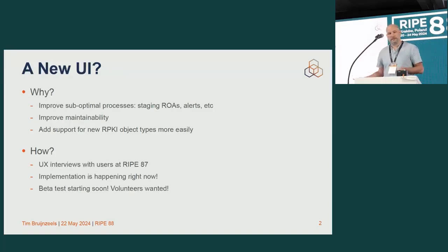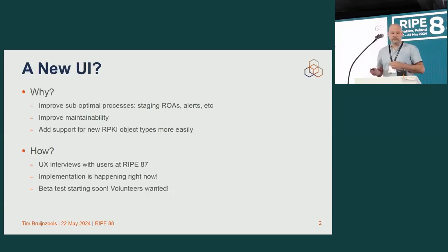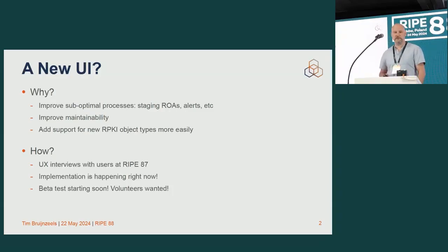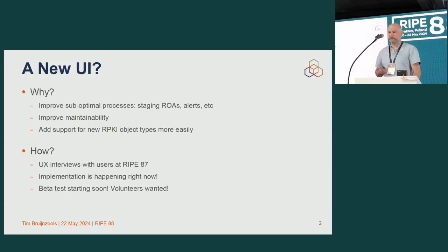We also want to replace the current stack because of maintainability and to make it easier for us to add new functionality to it. User feedback was gathered by our UX expert in Rome at the RIPE meeting, and in one-on-one sessions afterwards. That led to a design that we're implementing now. I also mentioned this in my email to the routing working group that I sent this week, so you might have seen it there as well.